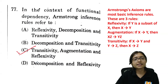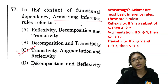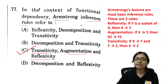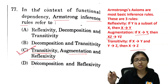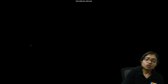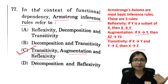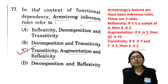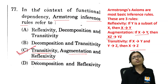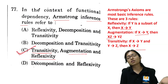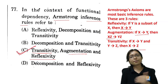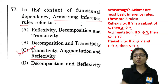Next: Armstrong's inference rules in the context of functional dependency refer to three rules: transitivity, reflexivity, and augmentation. That covers the questions discussed so far. In the next video, I will provide all detailed questions with explanations — including math, numerical, TOC, and compiler questions.